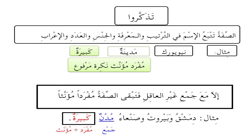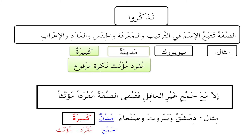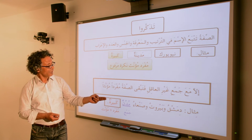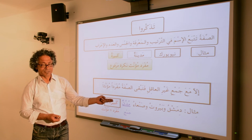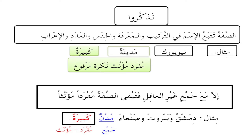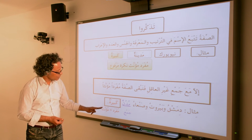The exception is: إلا مع جمع غير العاقل فتبقى الصفة مفردا مؤنثا. Remember when we talked about plurals, we said non-human plurals are treated as feminine singular. For example: دمشق وبيروت وصنعاء مدن كبيرة — Damascus, Beirut, and Sana'a are big cities. مدن is a non-human plural, therefore the proper adjective form is also the singular feminine: كبيرة.